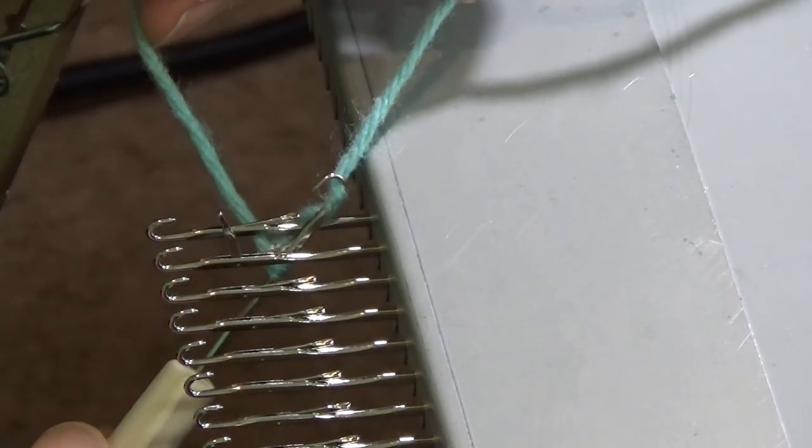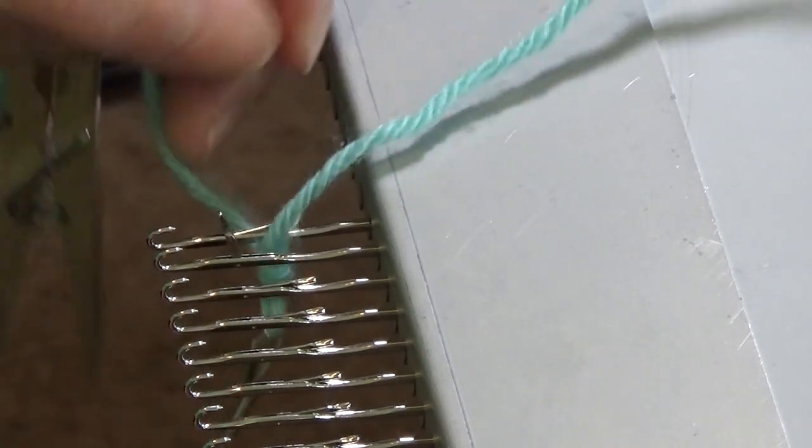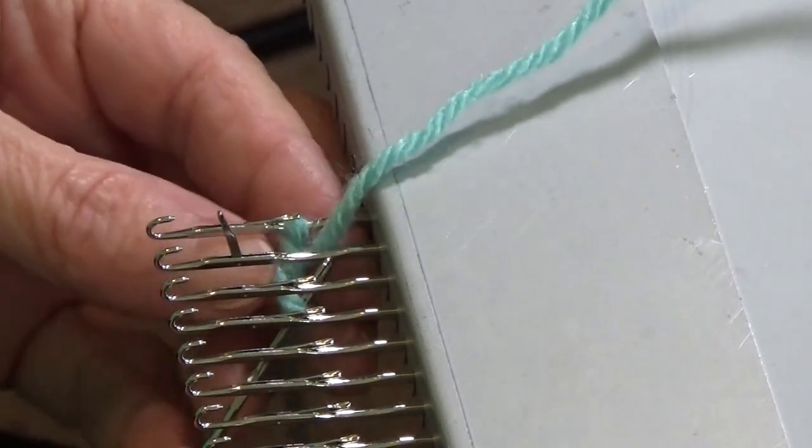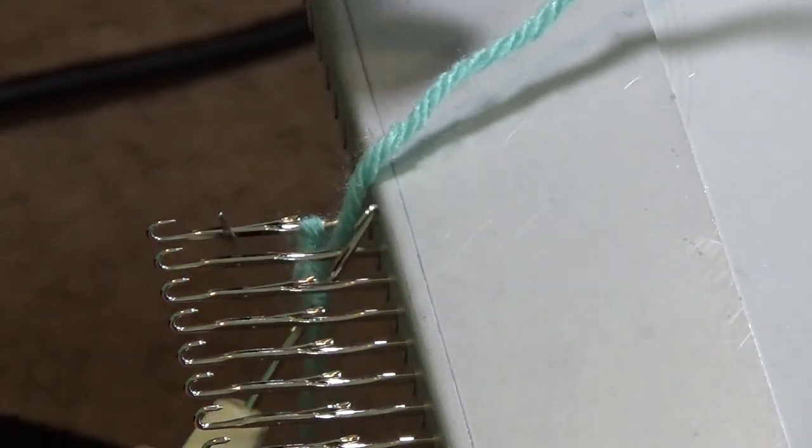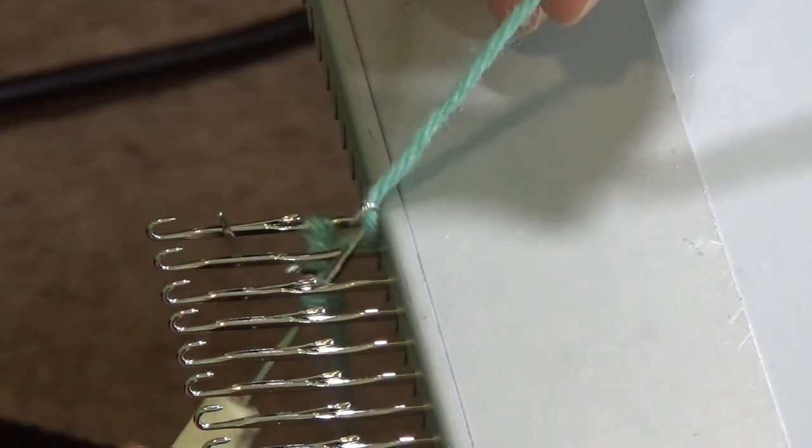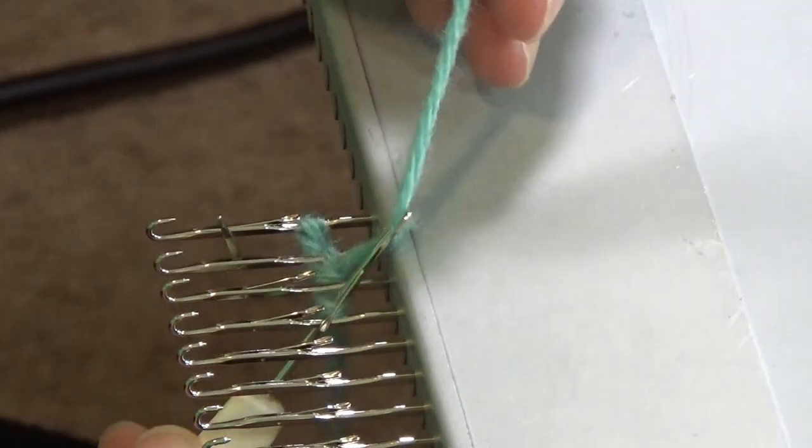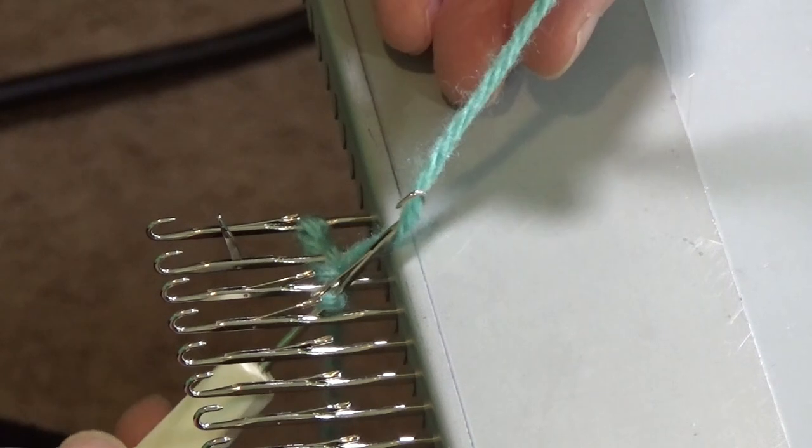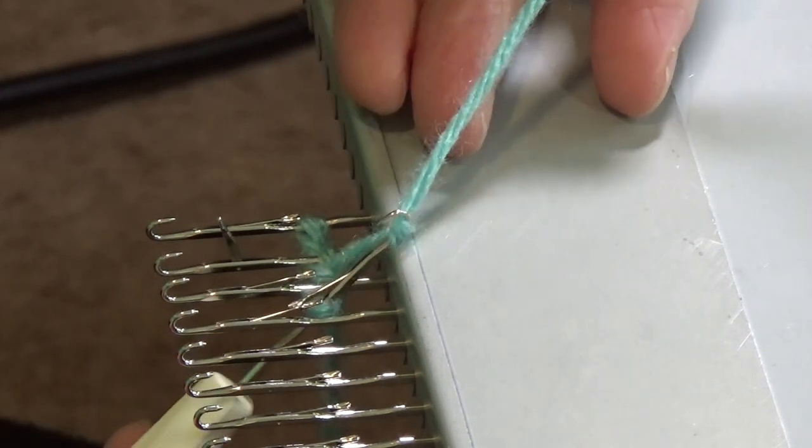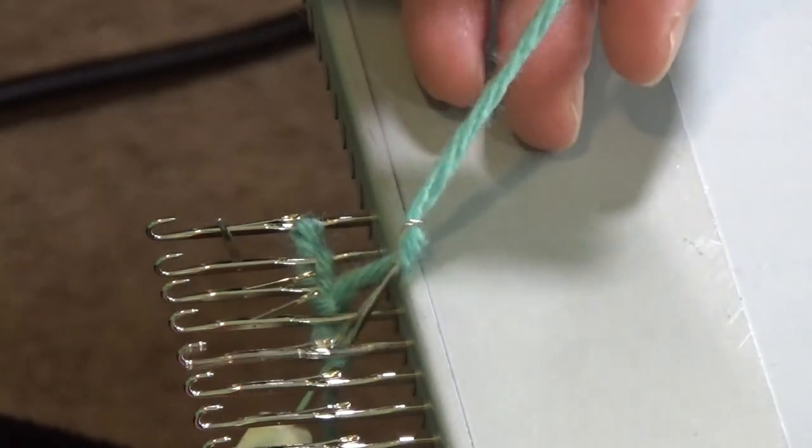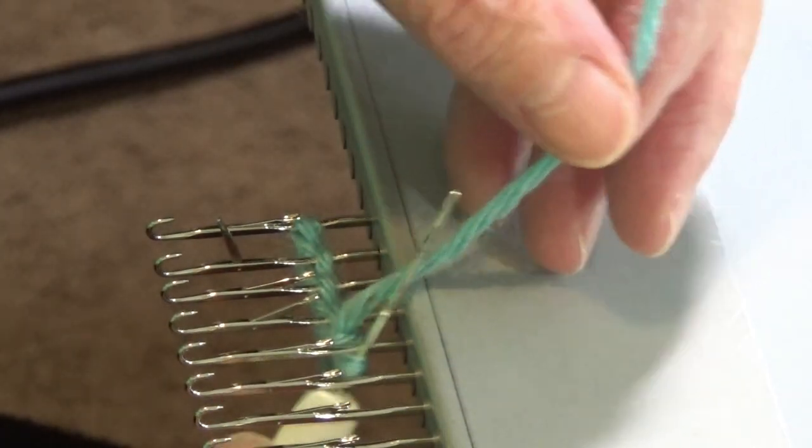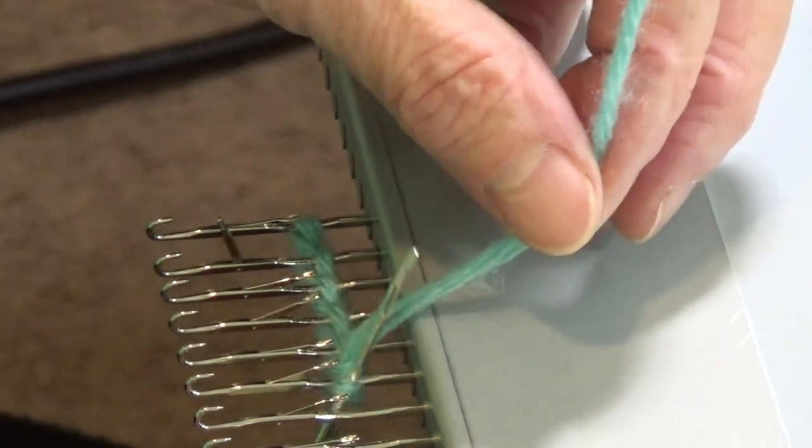Pick up that feeder yarn and pull it through. What that does is it creates a loop on that first hook without a knot. And then we are going to proceed across in that same fashion where I bring up my hook between the next two needles, pick up the yarn and pull it through. Next two needles, pick up the yarn and we are going to continue across this whole thing.